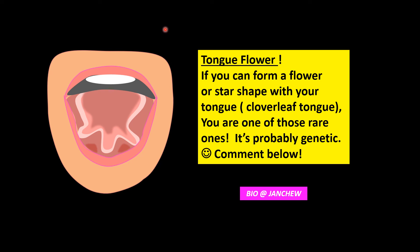Lastly, here's something interesting to share — the tongue flower or cloverleaf tongue. Some individuals can fold their tongue to form three loops like a star-shaped structure. It is very rare; in my teaching I found only two students who can form the cloverleaf tongue. If you can do this, you may be one of those rare ones, and its cause is probably genetic. Comment below if you have the ability to form the star-shaped tongue or tongue flower. Goodbye for now.